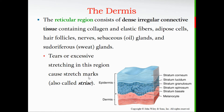The deepest layer of the dermis is the reticular region. It consists of dense irregular connective tissue containing collagen and elastic fibers. Here we find adipose cells that store fat, hair follicles, various nerves and nerve endings, sebaceous (oil) glands, and sudoriferous (sweat) glands. There are two kinds of sweat glands, which we'll discuss in the near future.